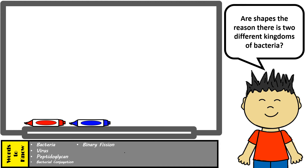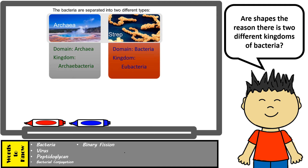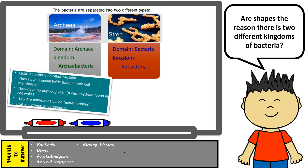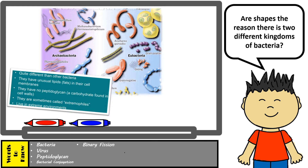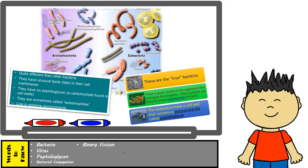There are two different kingdoms of bacteria, but they are classified mainly based on their living environment as well as their structural components, not necessarily their shape. Archaeobacteria live in harsh environments and do not have peptidoglycan cell walls — their shapes may be similar to those seen among eubacteria, which is why classification isn't solely based on shape. Eubacteria do have peptidoglycan cell walls and tend to live everywhere on Earth, even inside eukaryotic organisms such as us.